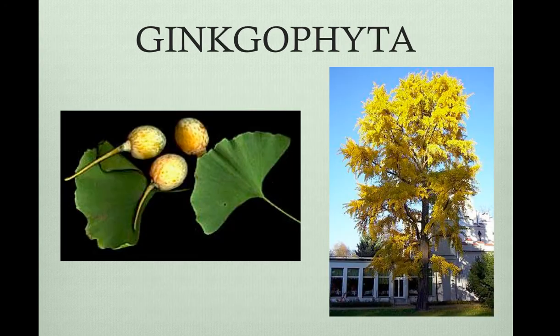There are four phyla of gymnosperms. The first is the Ginkgophyta. There's only one species, the Ginkgo biloba. The extract of the Ginkgo biloba is sold in health food stores because it supposedly improves memory. Ginkgos are used to line streets and cities because they tolerate pollution well. They also have large fan-like leaves that turn gold in the autumn. These are actually deciduous trees which lose their leaves, unlike most of the other gymnosperms. The female produces a large, fleshy seed that's stinky — it has the same organic acid as skunk spray and human body odor. Landscapers who know what they're doing only plant male plants.